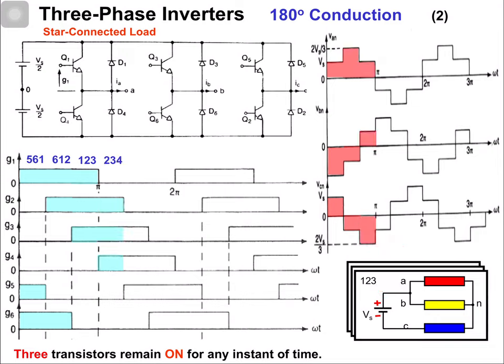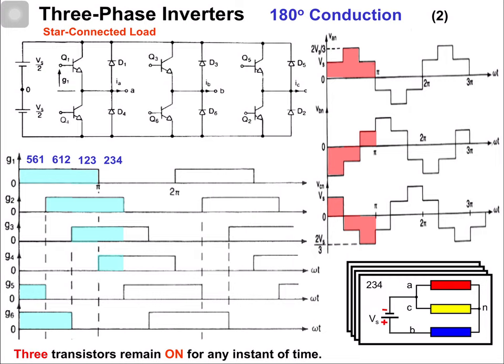In the next switching interval, switches 2, 3, and 4 are in the on state. This is the equivalent circuit. Phase A is connected with the negative terminal because switch 4 is on. Phase C is connected with the negative terminal because switch 2 is on. Phase B is connected with the positive terminal because switch 3 is on.